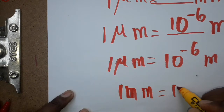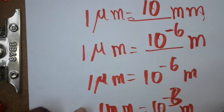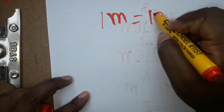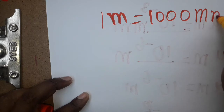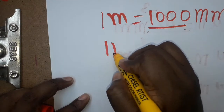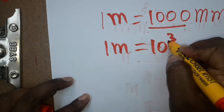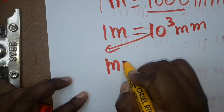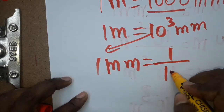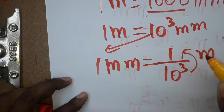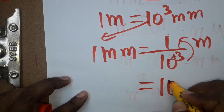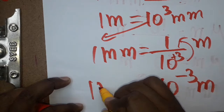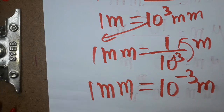How did we get 10 power minus 6? Because one meter is equal to 1000 millimeters, and 1000 we can write as 10 power 3. So one meter equals 10 power 3 millimeters. Bringing 10 power 3 to the denominator, one millimeter equals 1 divided by 10 power 3 meter, which is 10 power minus 3 meter.